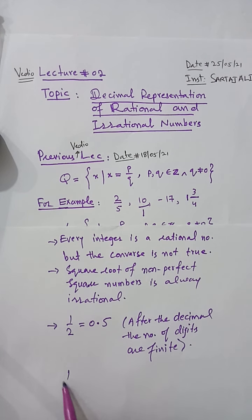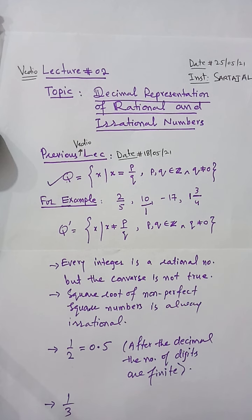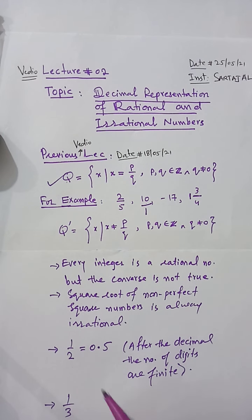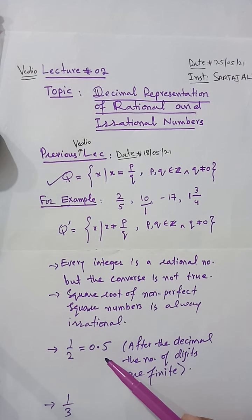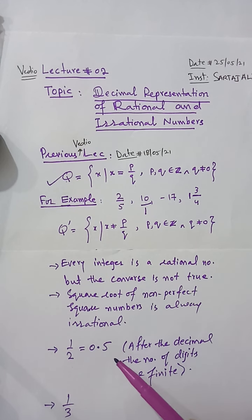According to the definition, both 1/2 and 1/3 are rational numbers because they are written in quotient form with p and q as integers and q ≠ 0. But in decimal form, 1/2 = 0.5, which is rational because after the decimal point if the number of digits is finite — meaning the decimal terminates — then that decimal representation is always rational.